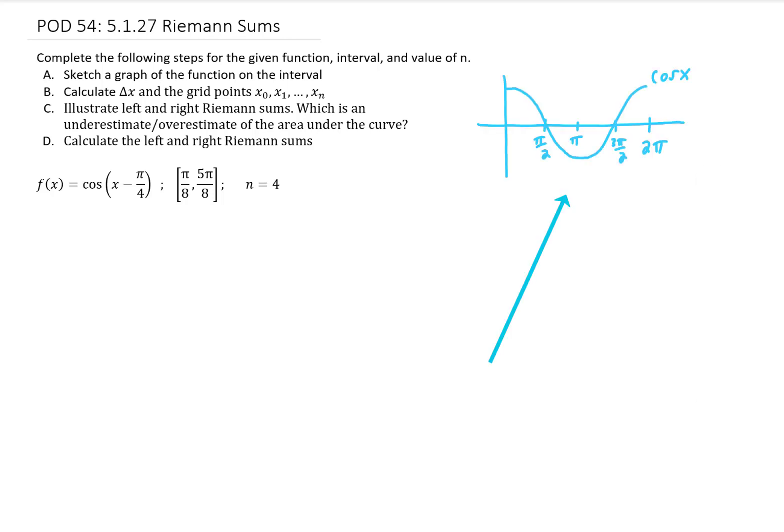We should first recall what a cosine graph looks like, and notice that this x minus pi over 4 tells us that we're going to take this basic cosine graph and shift it to the right by pi over 4 units. Now of course you can use technology to help you out with this, but I'm going to try to get this down by hand.